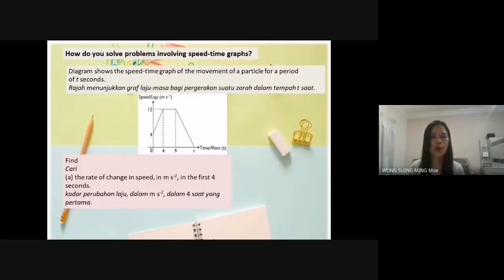How do you solve problems involving speed time graphs? The diagram shows the speed-time graph of the movement of a particle for a period of 3 seconds. Find the rate of change of speed in meters per second squared in the first 4 seconds.